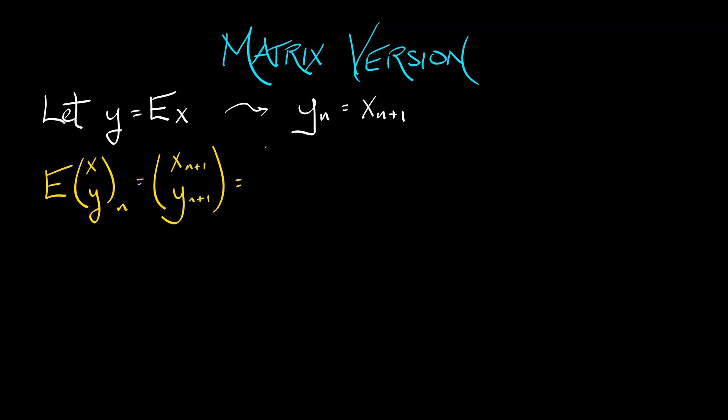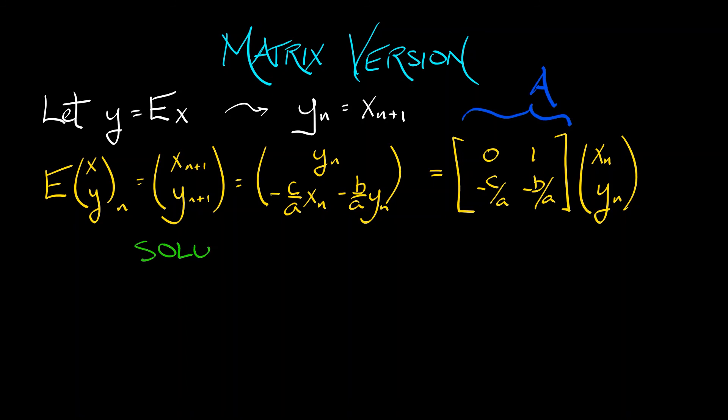I take the vector variable (x, y). I hit that with the shift operator at time step n. That is really xn+1, yn+1. What is that? Well, xn+1 is clearly yn by definition. yn+1 is xn+2, which by that second order linear recurrence relation is -c/a times xn minus b/a times yn. Pulling out the coefficients of this linear function gives us the matrix with rows [0, 1] and [-c/a, -b/a] that matrix is applied to the vector (xn, yn). And that's it. We have our linear system of the form Ex = Ax where A is this matrix [0, 1; -c/a, -b/a].